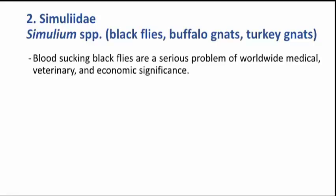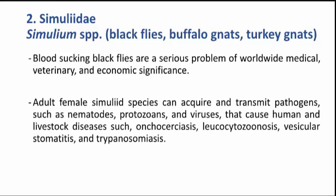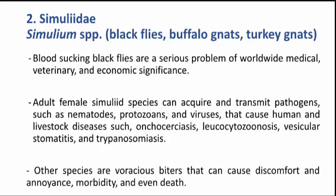Let's talk about family Simuliidae, Simulium species, or black flies. Blood-sucking black flies are serious problems of worldwide medical, veterinary, and economic significance. Adult female Simuliid species can acquire and transmit pathogens such as nematodes, protozoa, and viruses that cause human and livestock diseases such as onchocerciasis, vesicular stomatitis, and other diseases. Other species are biters that can cause discomfort and enhanced morbidity and even death.